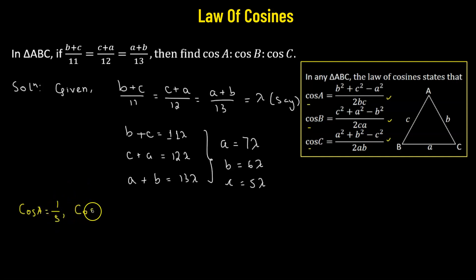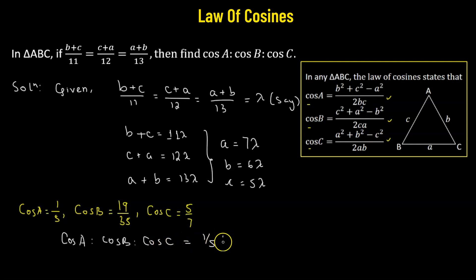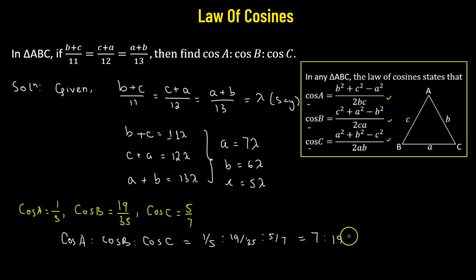Then cosine of B comes out to be 19 over 35, and cosine of C comes out to be 5 over 7. Now that we have the values of cosine A, cosine B, and cosine C, we can write the ratio of cosine A to cosine B to cosine C as 1 over 5 to 19 over 35 to 5 over 7. Since it's a ratio, we can simplify this to integer values, giving us 7 is to 19 is to 25.